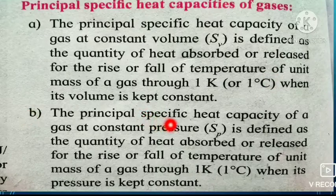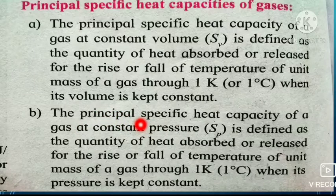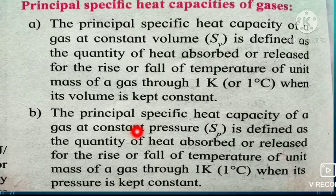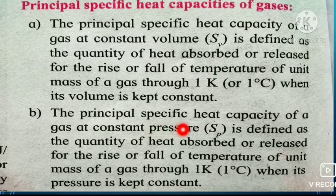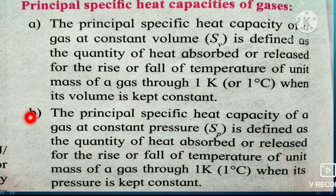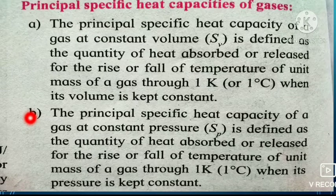The second definition: the principal specific heat capacity of a gas at constant pressure, denoted by Sp, is defined as the quantity of heat absorbed or released for the rise or fall of temperature of unit mass of a gas through 1 degree centigrade or 1 degree Kelvin, when its pressure is kept constant.